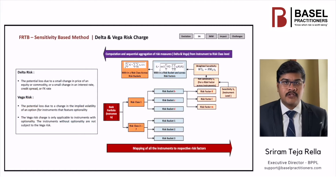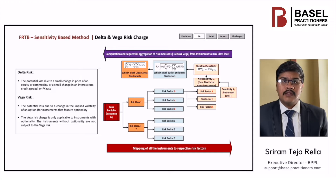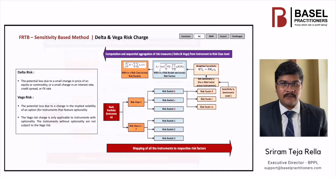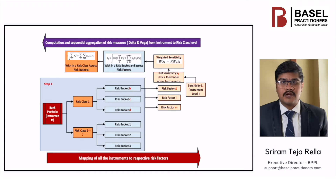The delta and vega risk charge computation methodology is very similar in nature as they are linear risk charges. Delta is required for all instruments, whereas vega is required only for option-embedded instruments. The computational procedure for linear risks can be divided into five calculation steps. Step 1: Assignment of positions to risk classes, buckets, and risk factors. In this picture, I have shown seven risk classes.